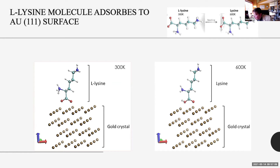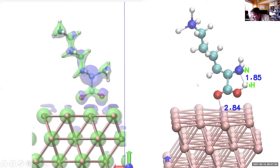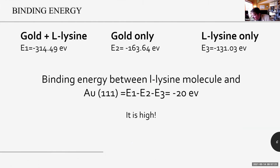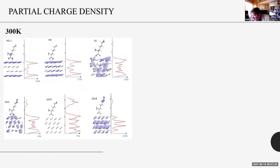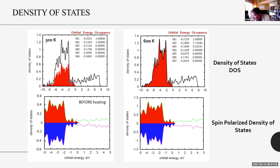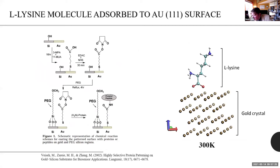There is a question in the chat from Professor Kilina. The question is: in the introduction, the figure shows that gold interacts with the molecule via sulfur-to-gold binding rather than the carboxyl group. Why did you use carboxylate instead?